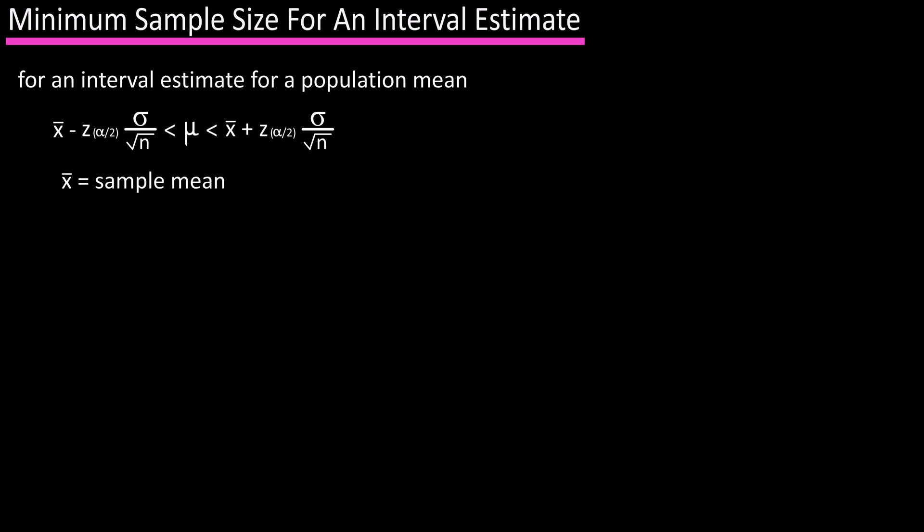In this formula, x̄ is the mean from a random sample. Z(α/2) is a z-score based on the confidence interval we're using. This is usually 90%, 95%, or 99%, and I have the z-values listed for those percentages.